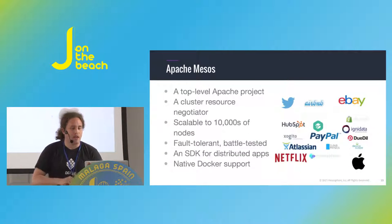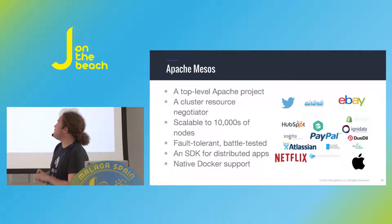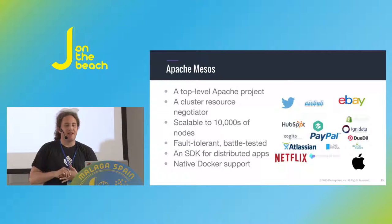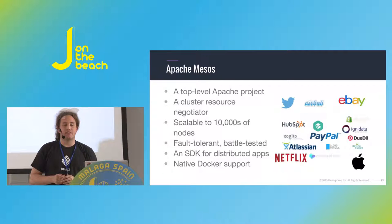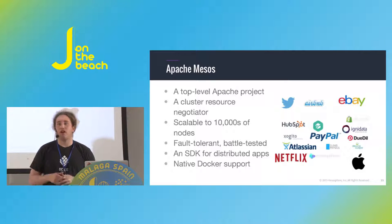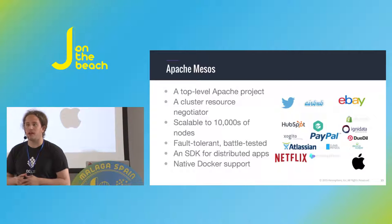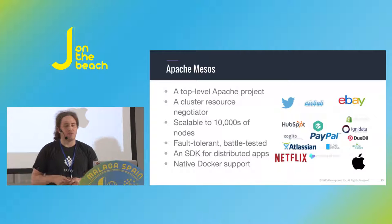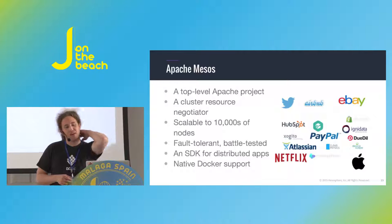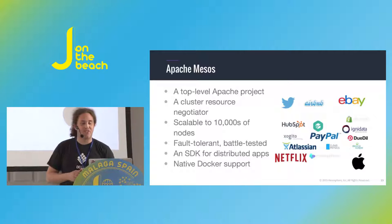Apache Mesos is a top-level Apache project — we call it a cluster resource negotiator — and this reflects its two-level scheduling architecture, meaning we can have individual schedulers on top. It's highly scalable: Twitter and Apple use it on clusters with several tens of thousands of nodes. All of you who own an iPhone and have used Siri have actually used Mesos, because the Siri infrastructure is powered by Mesos. Running in those environments it's quite fault tolerant and battle tested.